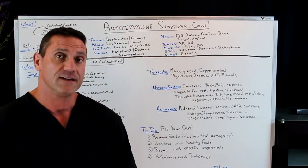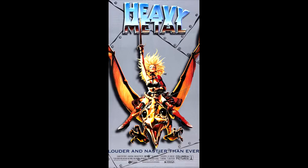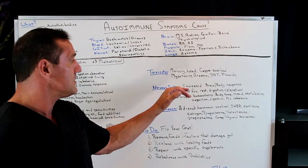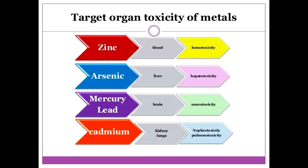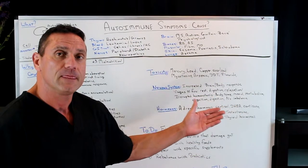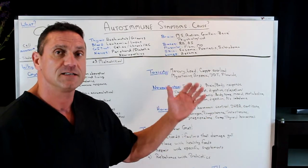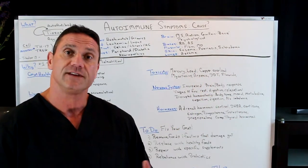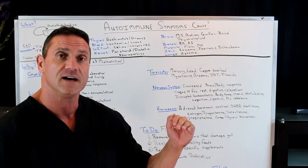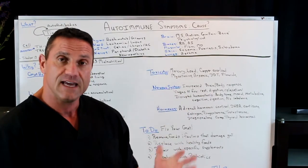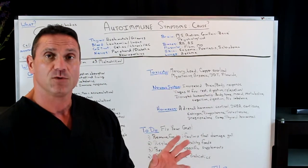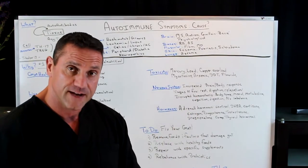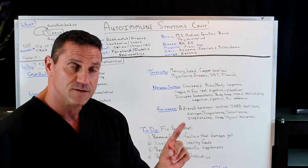Toxicities — is it heavy metals? Is it mercury, lead, copper overload, mycotoxins, arsenic, DDT, fluoride? All this stuff — is it Roundup, pesticides, insecticides? Do you live in an area where it's heavily contaminated? Yes, that will affect your body and your autoimmune condition.